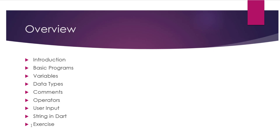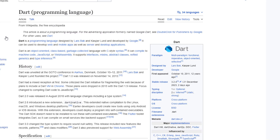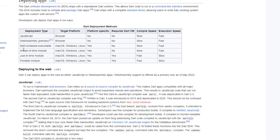Dart is a programming language developed by Google. Dart is used to make applications for Android, iOS, web, and desktop. It is an object-oriented language, and if you know any language like C++ or Java, then Dart will be easy to learn because its syntax is similar to C++ and Java. If you want to learn more about Dart's history, you can open the Wikipedia link and read everything about it.